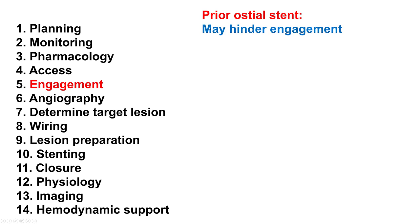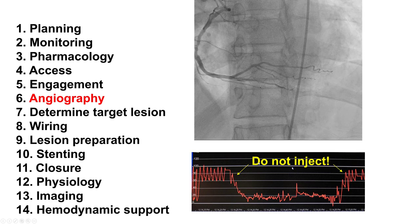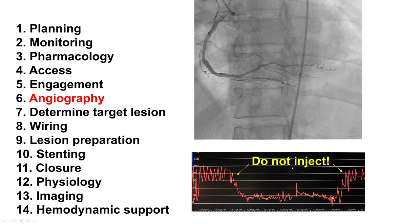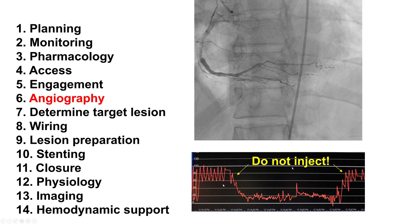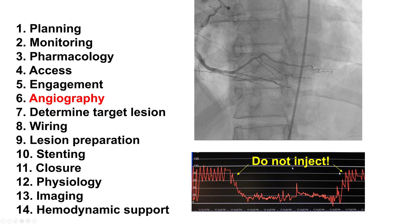In terms of angiography, it is important to not inject when the pressure is dampened — that's when bad things can happen, such as coronary or aortocoronary dissections. So it is very important, as standard practice, to look at the pressure waveform both before and after injection. If the blood pressure is dampened, then injection should not happen.